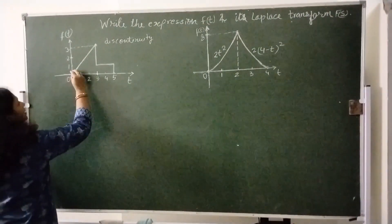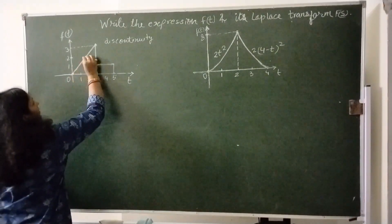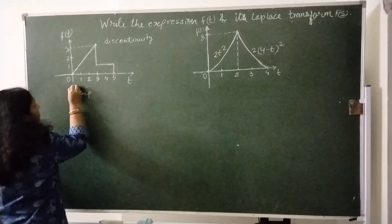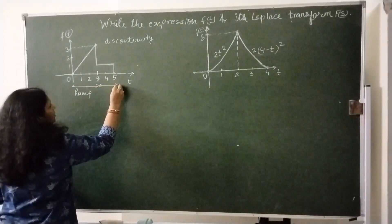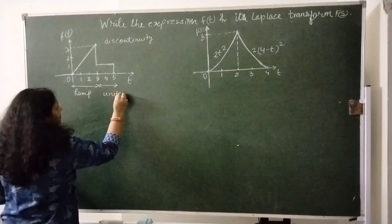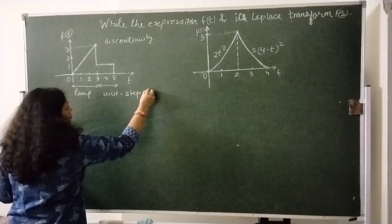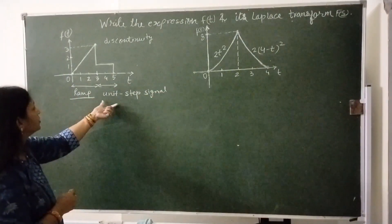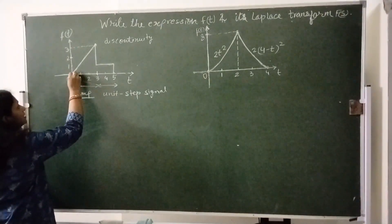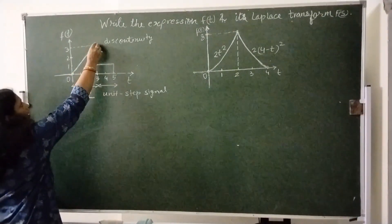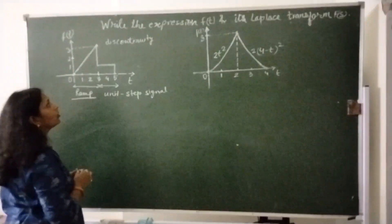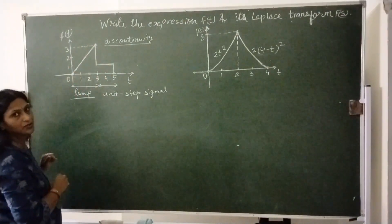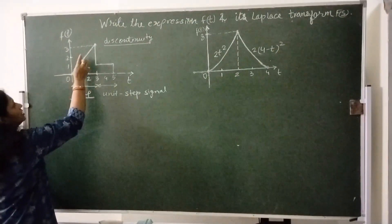The signal is a combination of ramp and unit step signal. From 0 to 3 it is a ramp signal and from 3 to 5 it is a unit step signal. We will see how to write the expression for ramp and unit step signal. This ramp is starting at t equals 0 and ending at t equals 3. We can see one discontinuity here and another at this point — slope is changing at these two points.